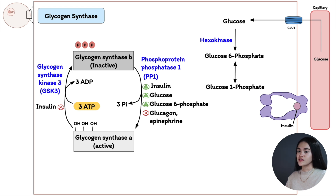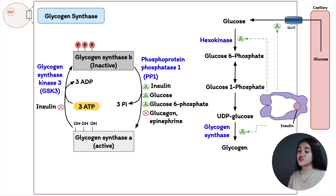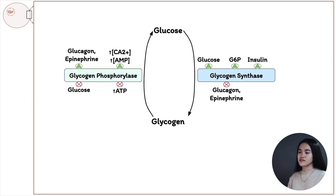Glucose is taken up by the cell and converted to glucose 6-phosphate by hexokinase, then to glucose 1-phosphate and UDP-glucose, where glycogen synthase facilitates glycogen synthesis. Insulin triggers glucose uptake and hexokinase activity, inhibits GSK3, and activates PP1 to activate glycogen synthase a. PP1 also inactivates glycogen phosphorylase to prevent glycogen mobilization.